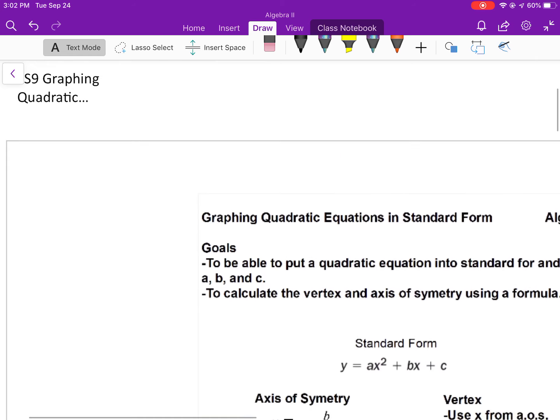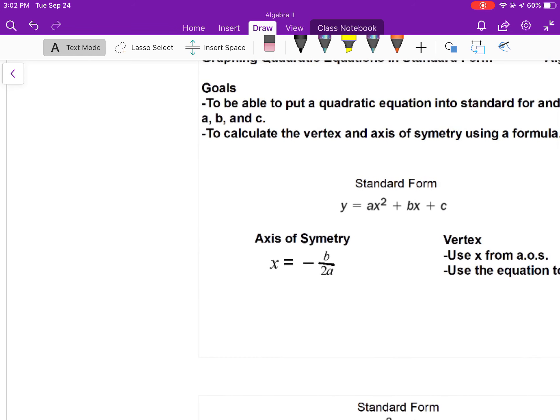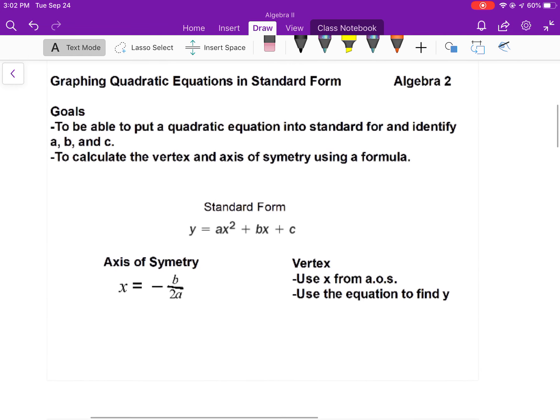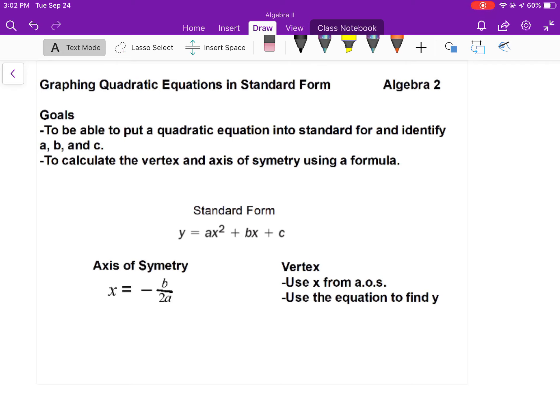Last way to graph a quadratic, and that is going to be graphing in standard form. Standard form is the same thing as what you would have done for the quadratic formula. It's ax squared plus bx plus c, where a is in front of x squared, b is in front of x, and c is your constant.